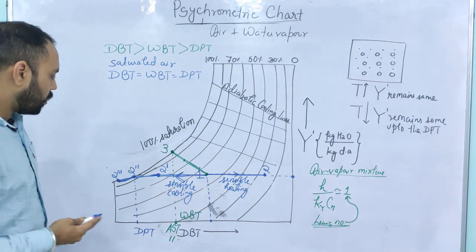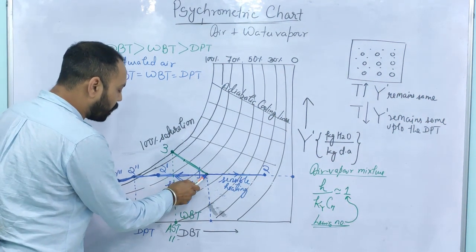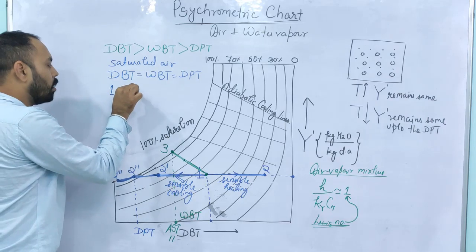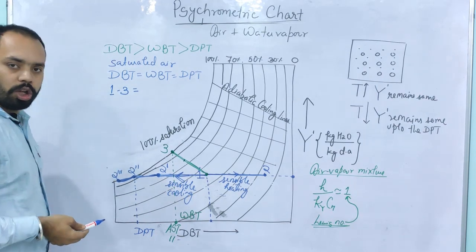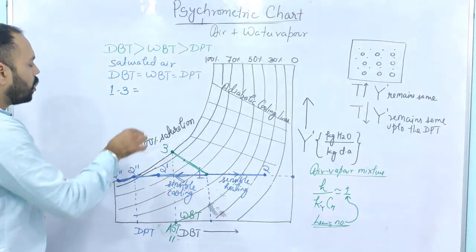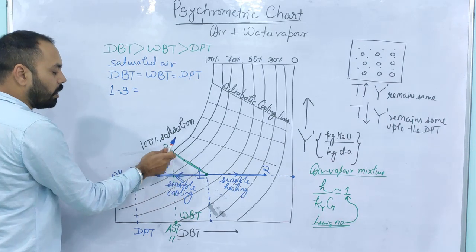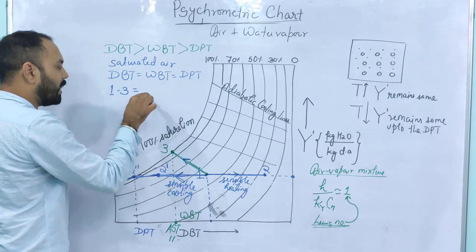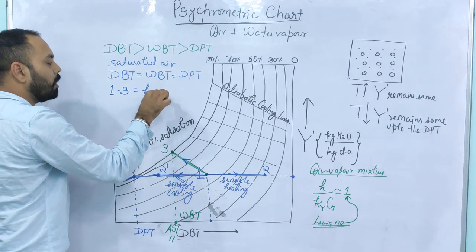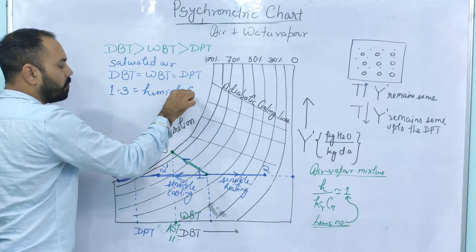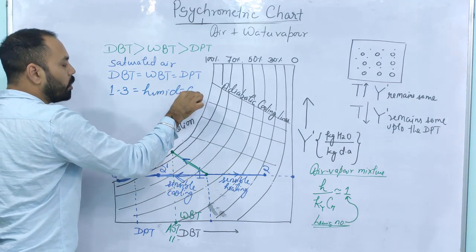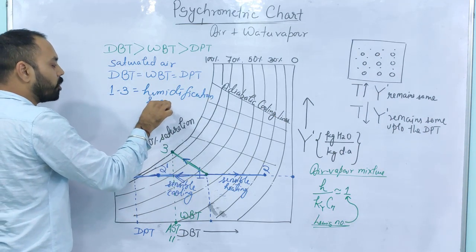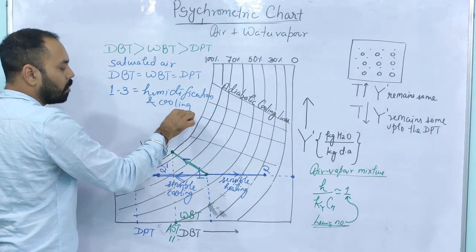Let us discuss what is happening in process 1 to 3. From point 1 to point 3, point 3 is vertically above point 1, so Y' increases — this process is humidification. The temperature also decreases going from 1 to 3. Therefore, this process is humidification and cooling.